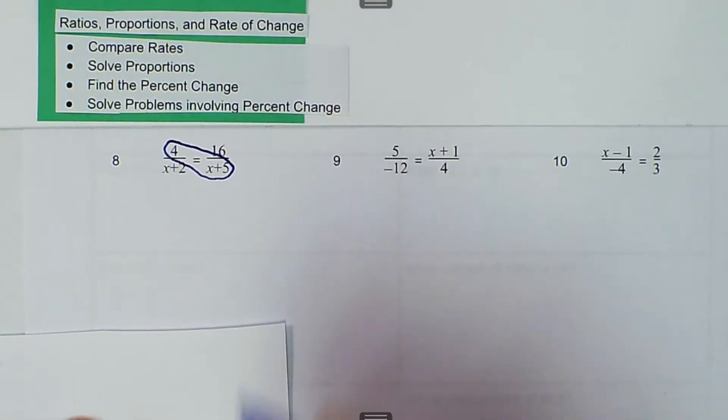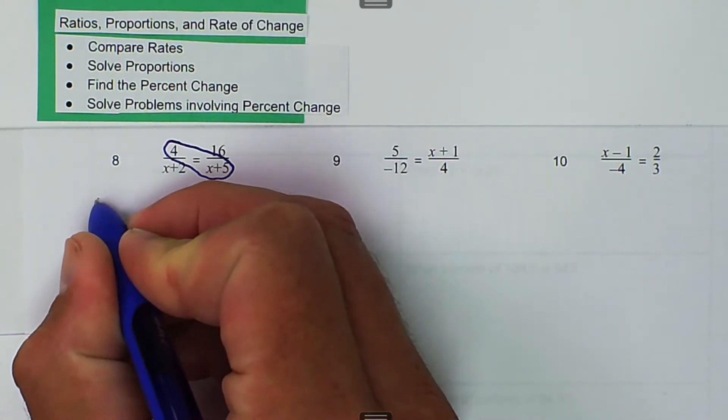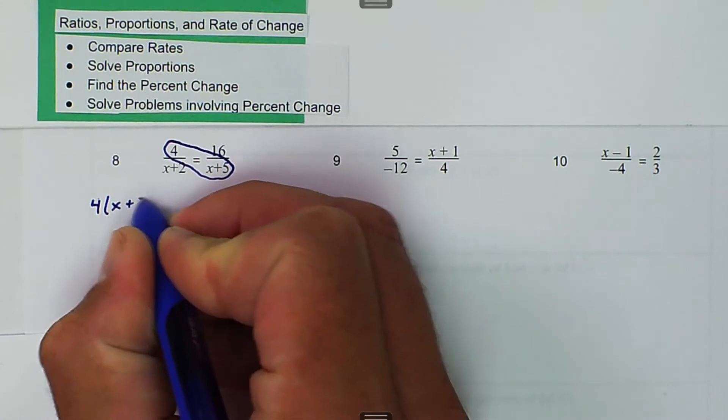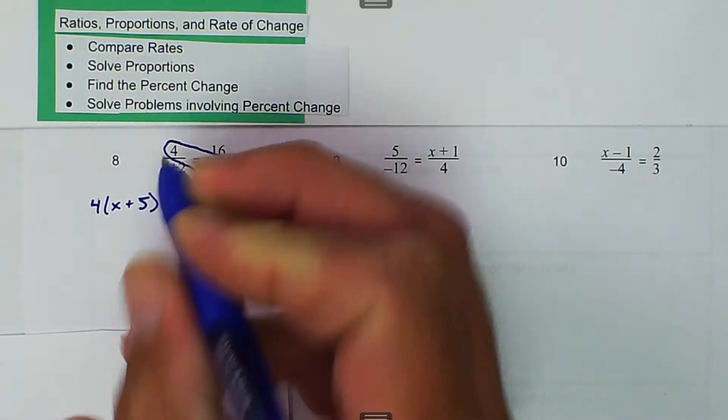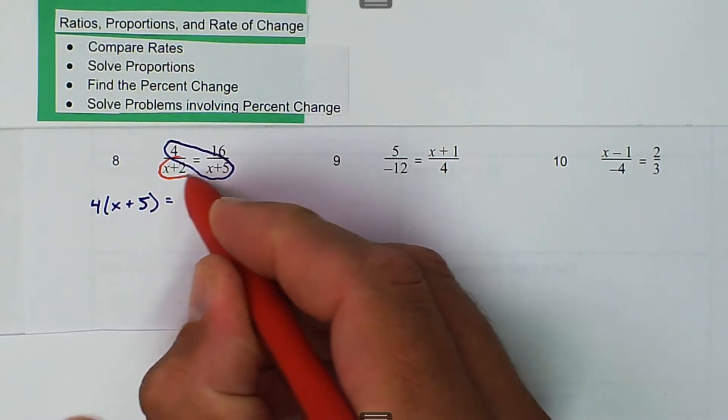So we're going to do our means times our extremes. We're going to say 4 times x plus 5, and that's going to be equal to 16 times x plus 2.